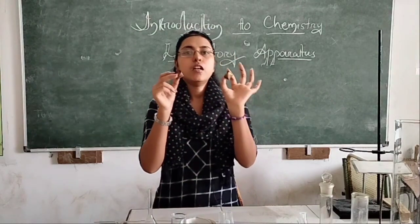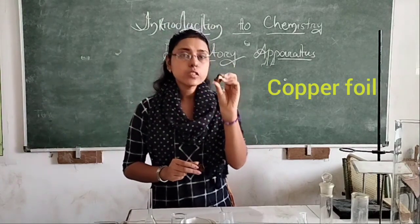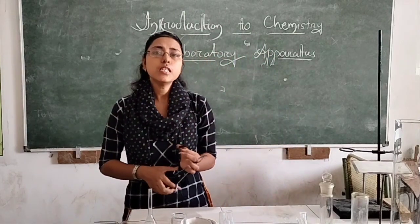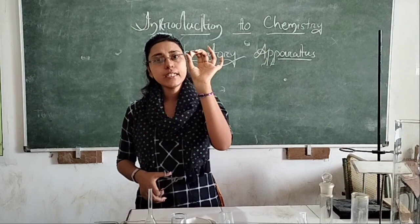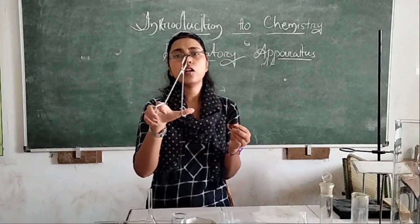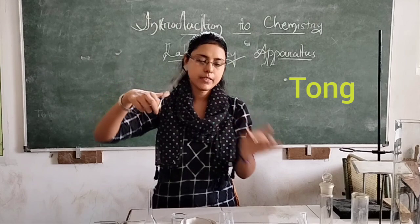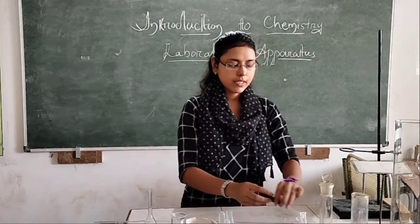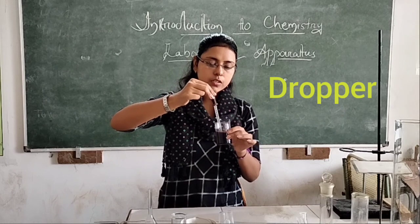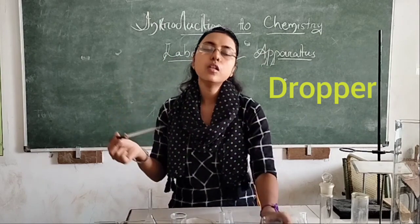This one is copper foil — it is made out of copper. This copper foil is used in organic experiments and many more experiments. When we are going to heat the copper foil, we have to hold it with an apparatus called tongs. By the help of these tongs we can hold the copper foil and heat it. Next, another apparatus is the dropper. The dropper is used to take the solution — like this we can take the solution and put it into another apparatus to continue the experiment.